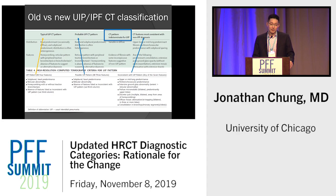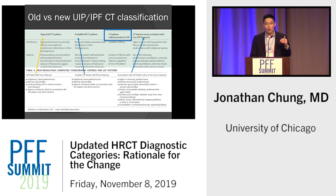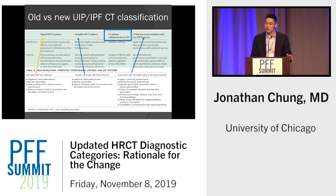The areas labeled in blue are the major changes from the old guidelines to the new guidelines. It actually pains me to say we're not going to talk about the typical UIP pattern, because that's actually where I am most useful to the clinician. When I say something is UIP on CT — I'll eat my hat if it's not — over 95% of the time it's going to be UIP on pathology. But that hasn't changed at all. Peripheral basal predominant pulmonary fibrosis with reticulation and subpleural honeycombing, with no findings suggesting an alternative diagnosis — that's UIP.